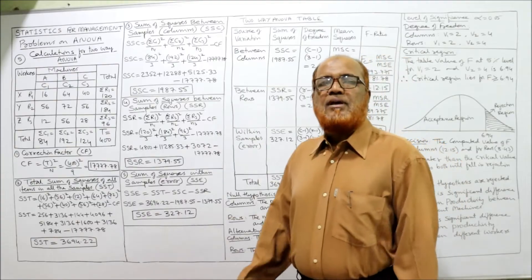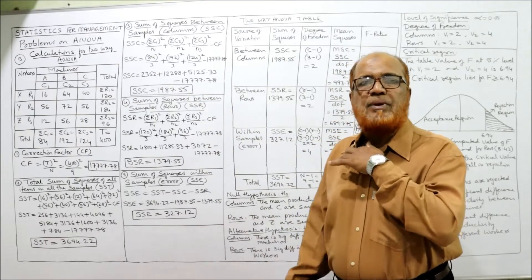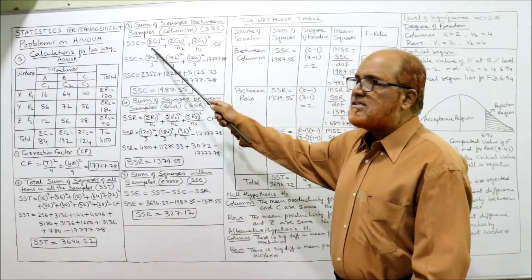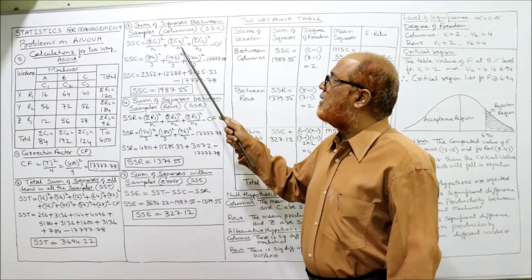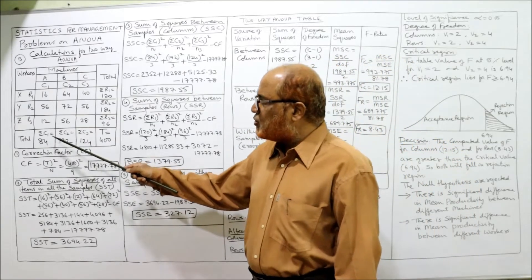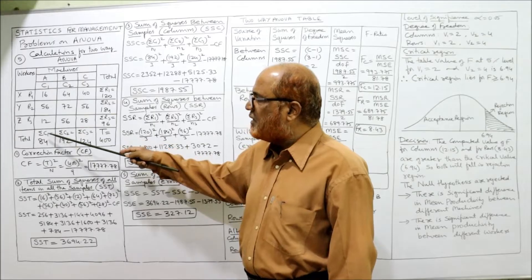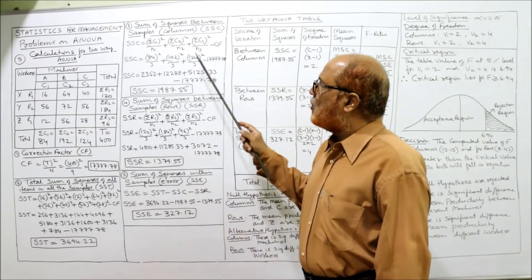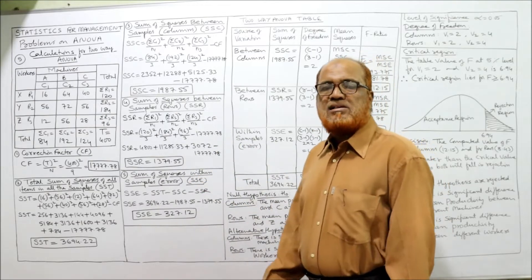SSC (sum of squares between columns, i.e., machines): formula is (ΣC1)²/N1 + (ΣC2)²/N2 + (ΣC3)²/N3 − CF. So: 84²/3 + 192²/3 + 124²/3 − 17,777.78. This gives SSC = 1,987.55.